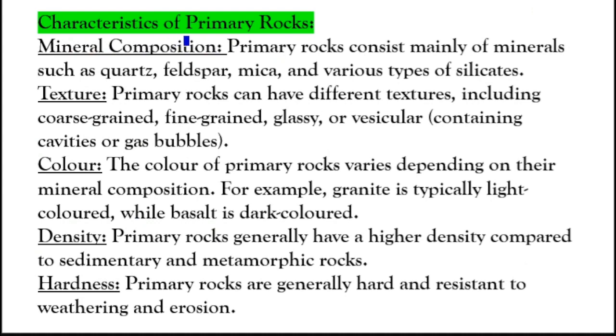Characteristics of primary rocks — mineral composition: primary rocks consist mainly of minerals such as quartz, feldspar, mica, and various types of silicates.